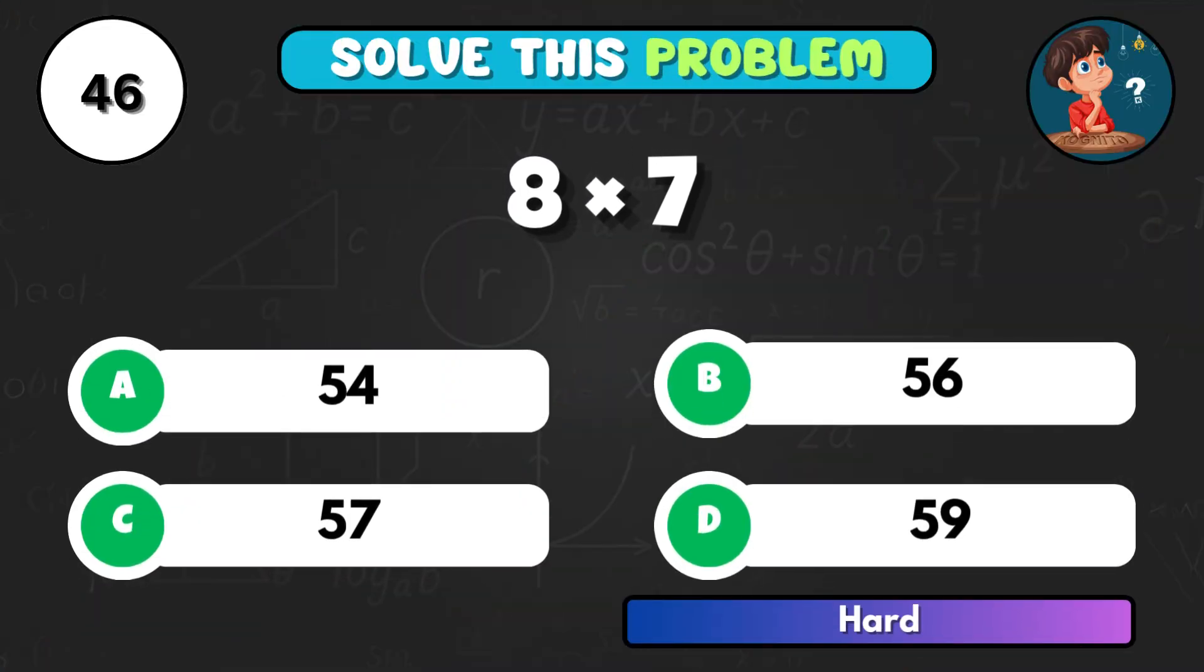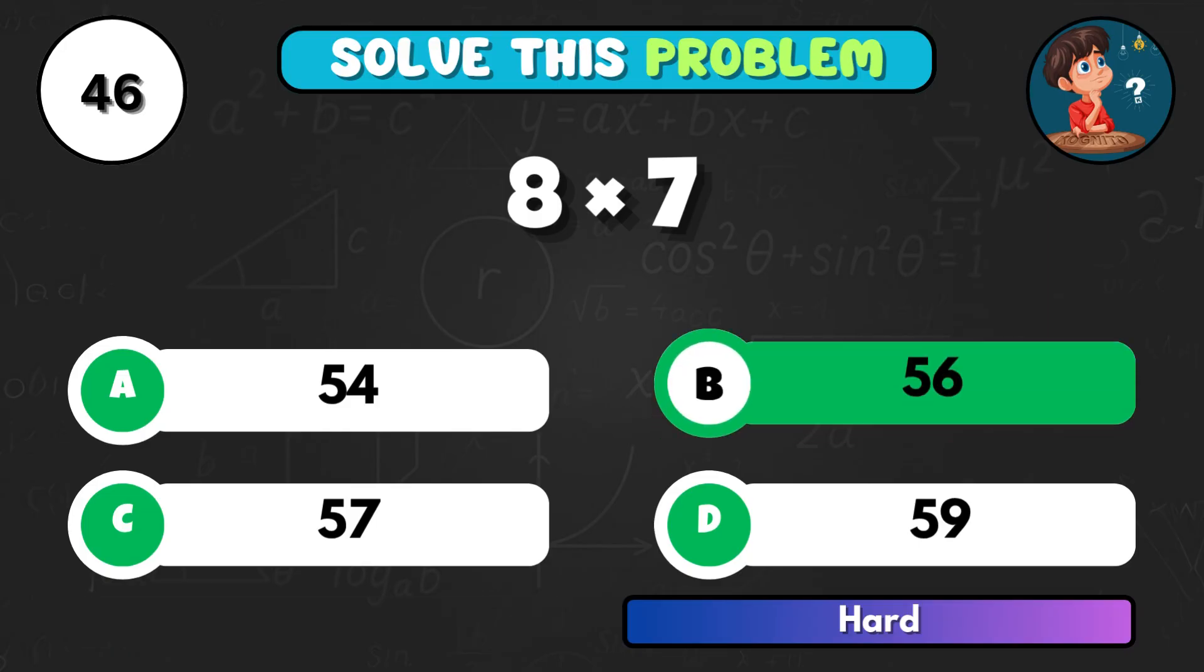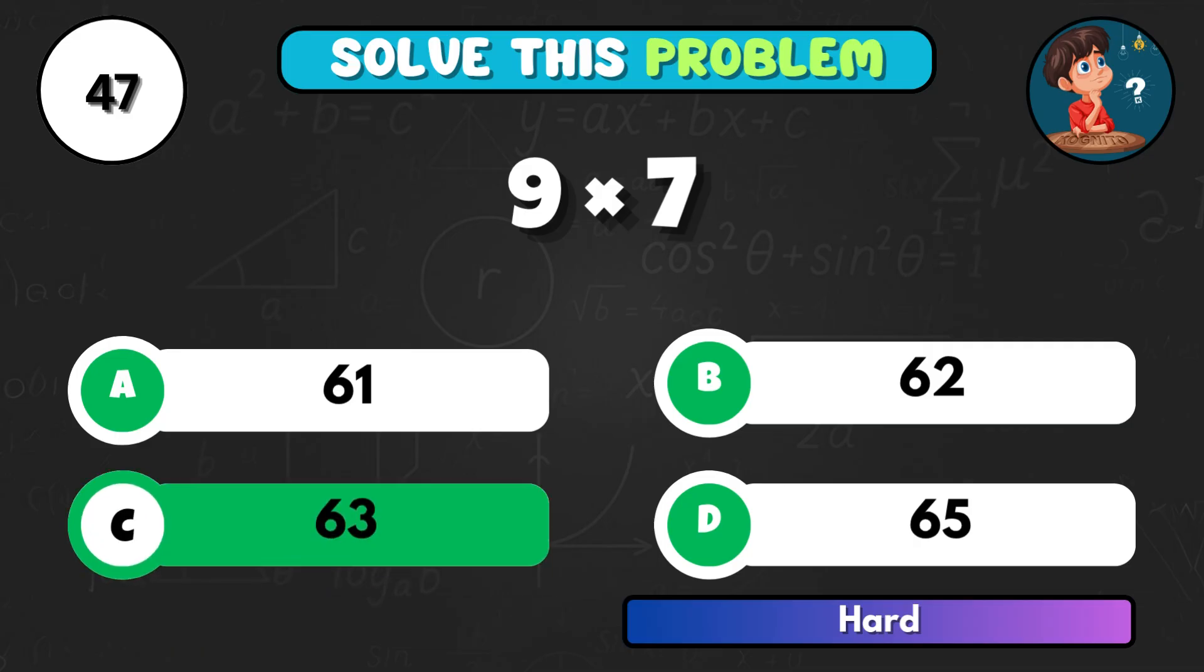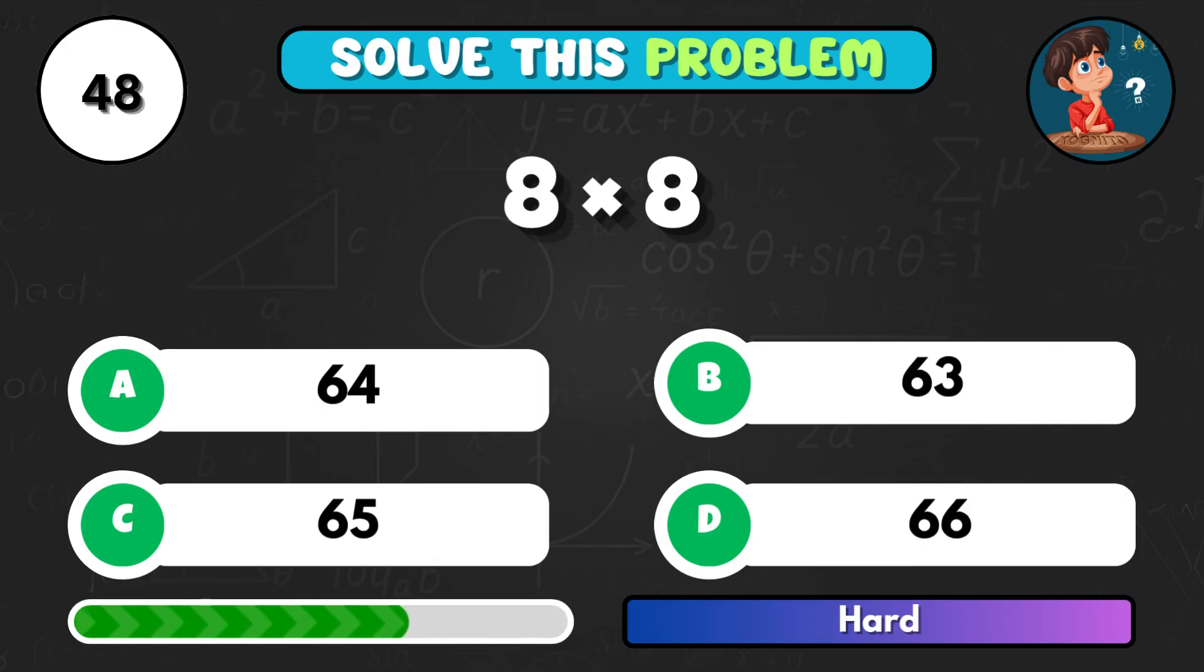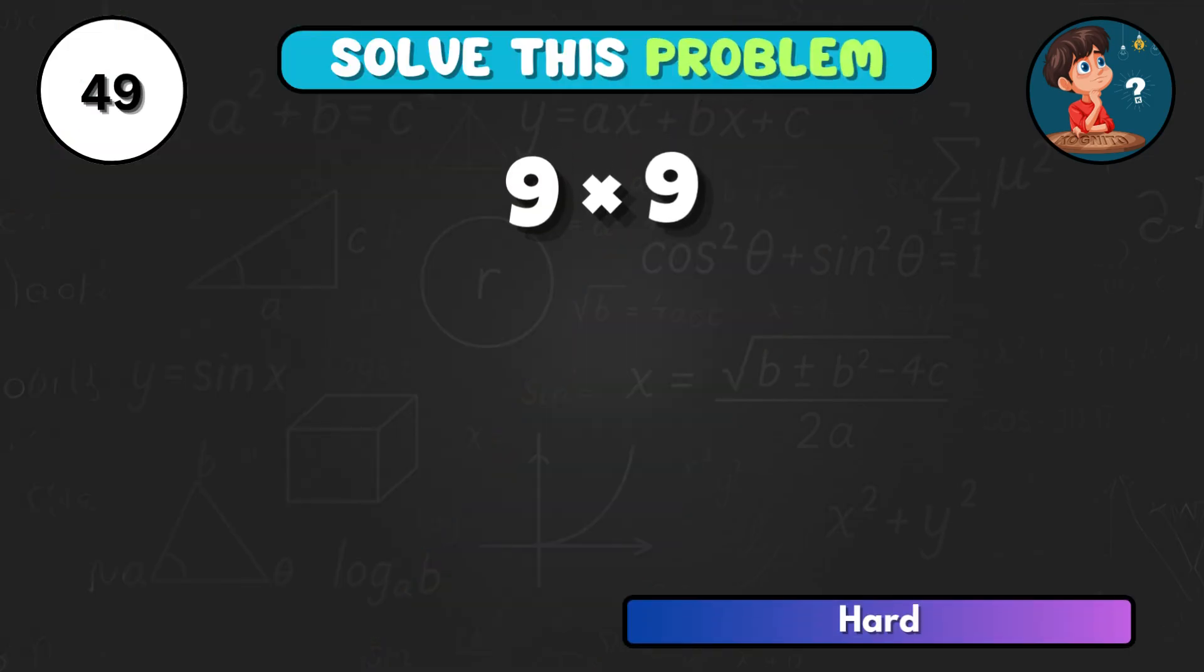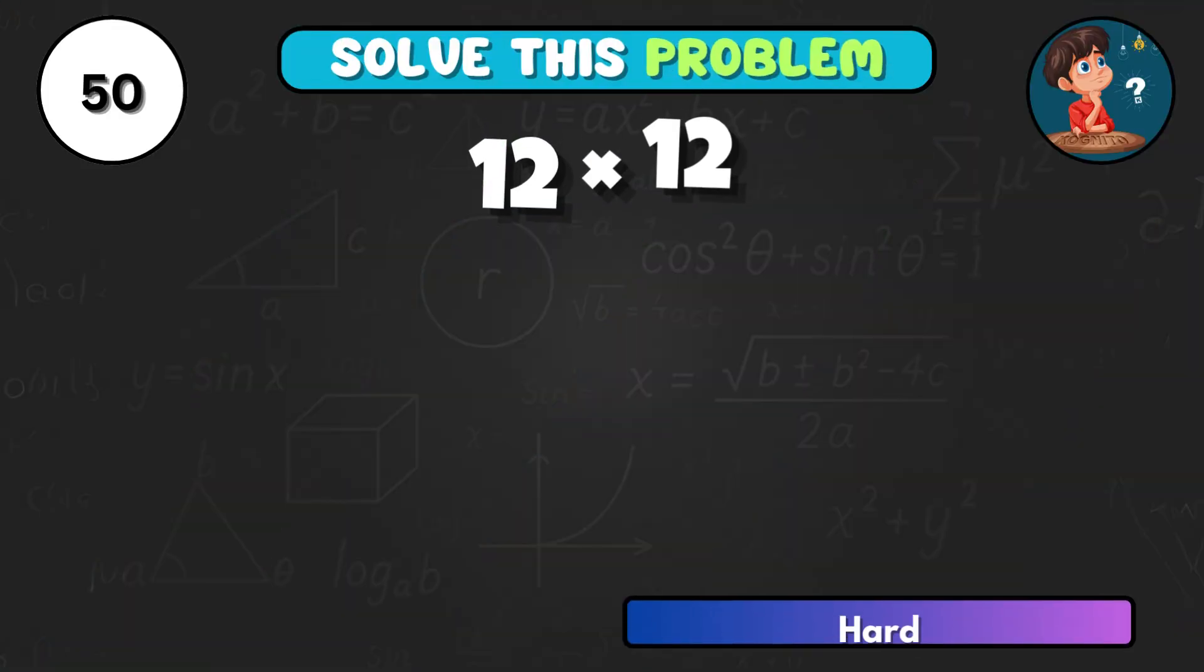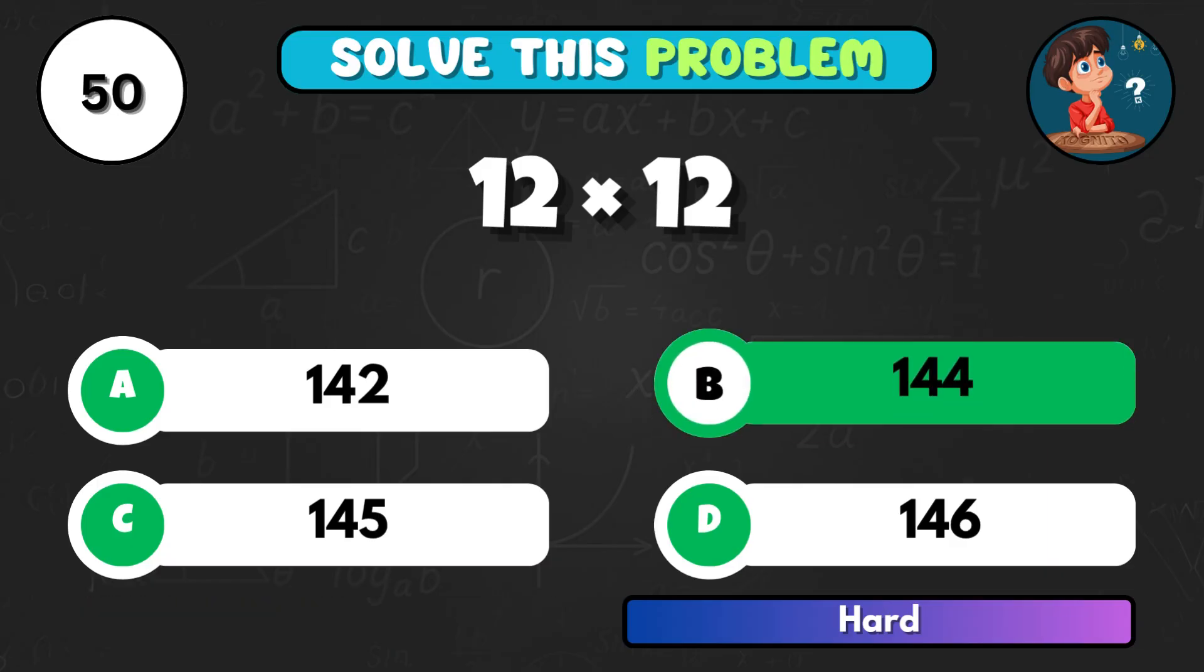8 times 7, what's the product? Option B, and that's 56. 9 times 7, what does that give? Correct answer C, total 63. 8 times 8, what's your result? Option A equals 64. 9 times 9, can you double check that? Correct choice D, giving 81. And to finish, 12 times 12, what's the answer? That's B, and the total is 144.